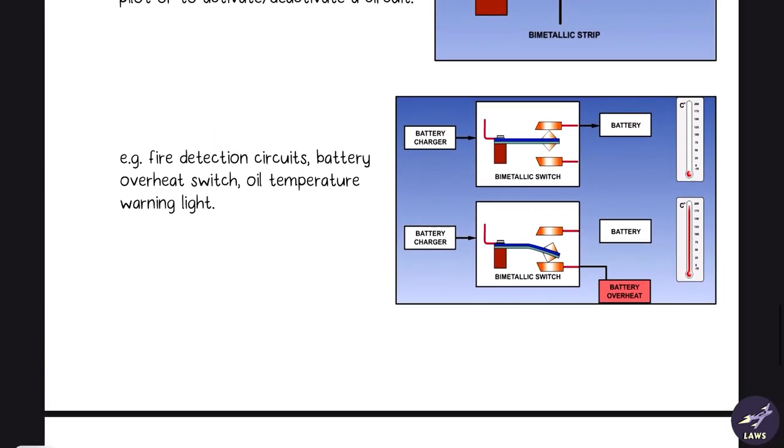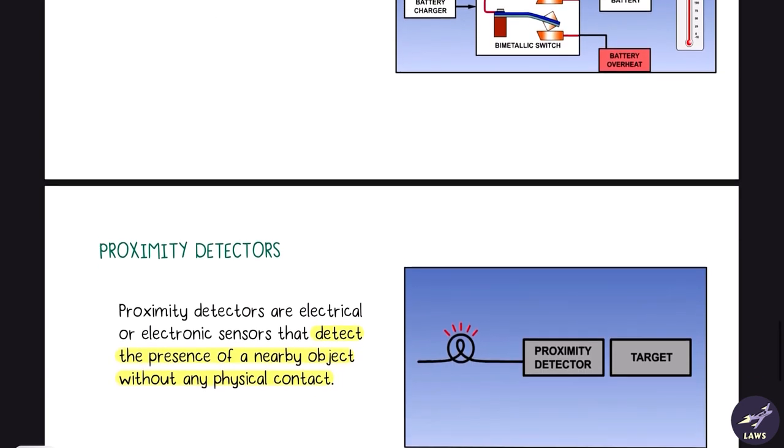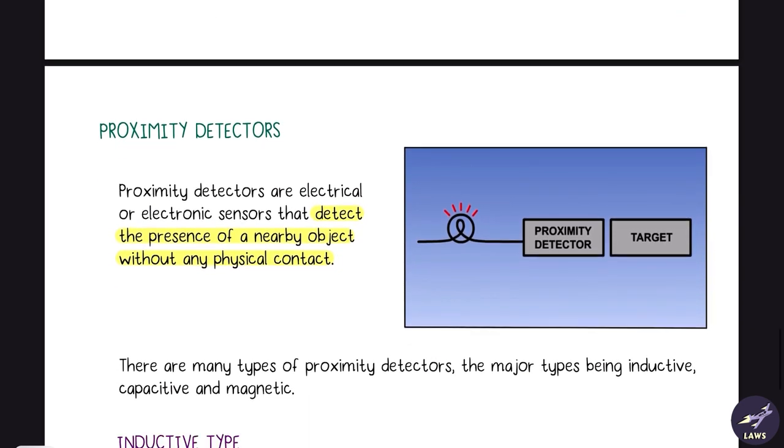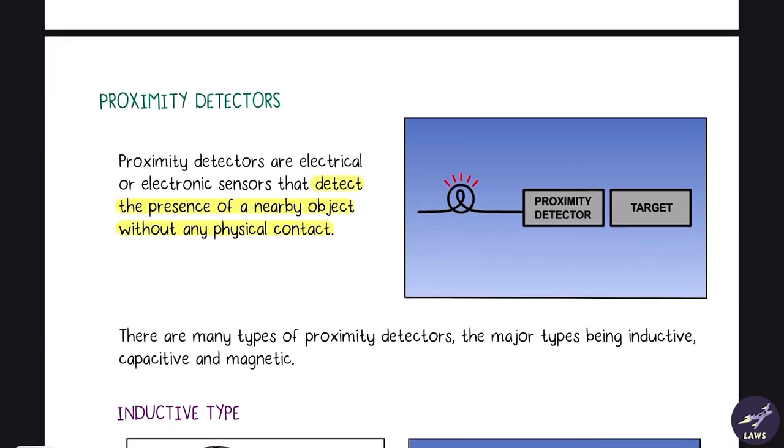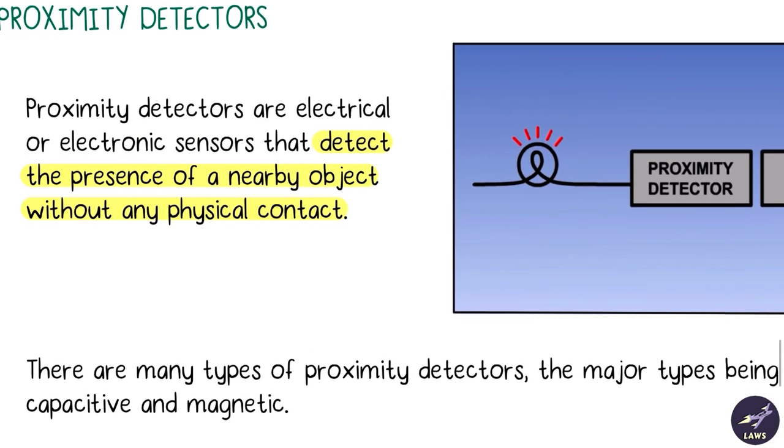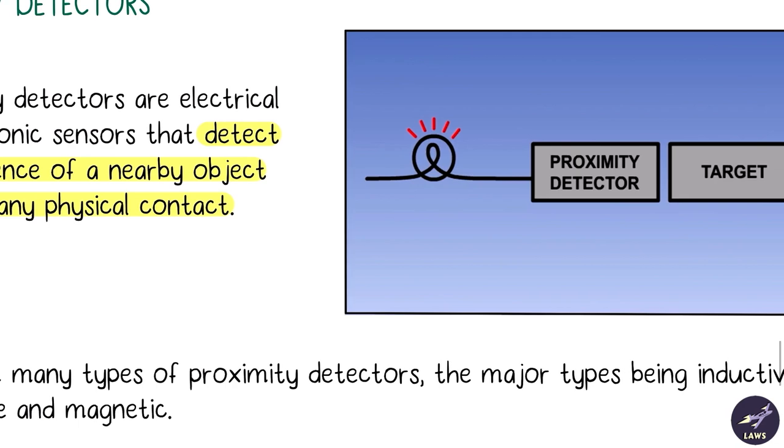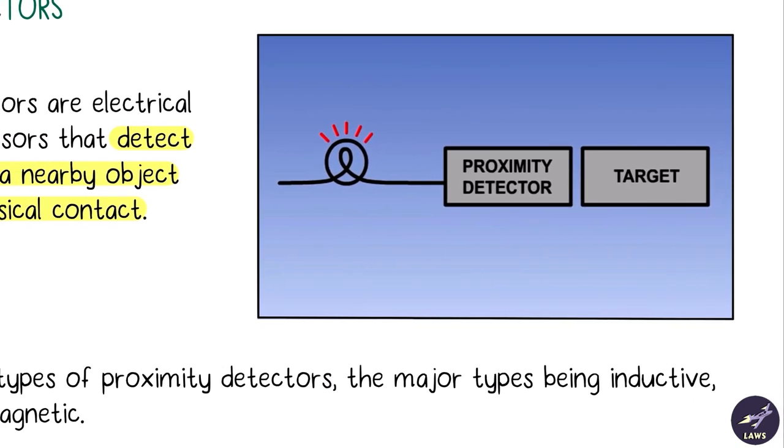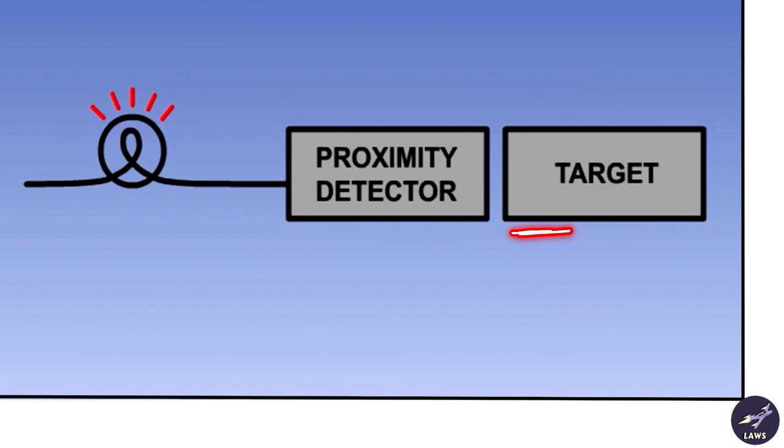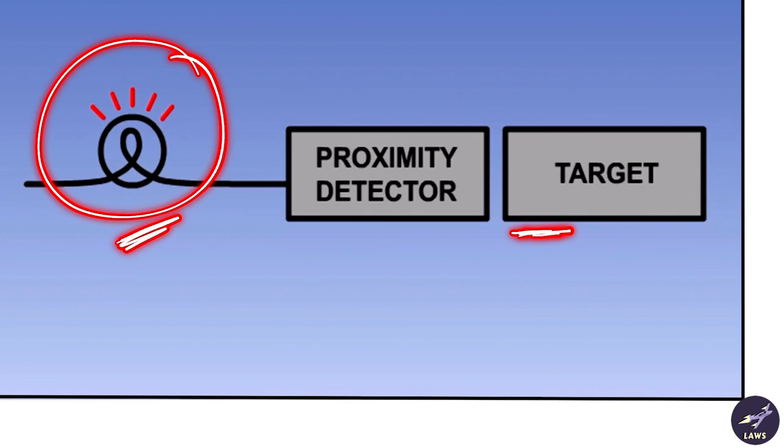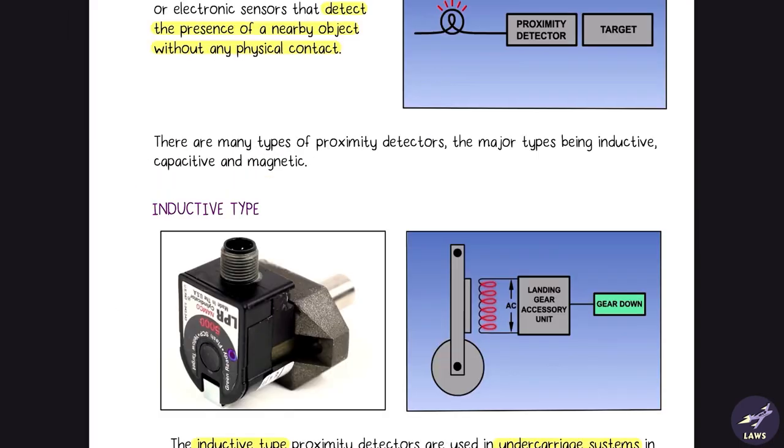Then we have proximity detectors. In modern aircraft this is used to detect the position of landing gear. It detects the presence of a nearby object without any physical contact. As you can see in this example, there is no physical contact but it has detected the presence of the target indicated by this light bulb. There are different types of proximity detectors, major types being inductive, capacitive and magnetic. We'll look at the inductive and capacitive type now.